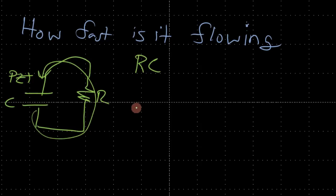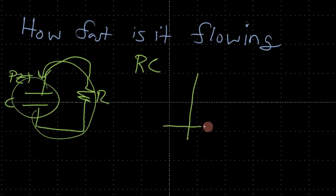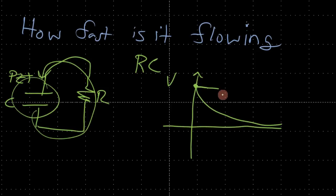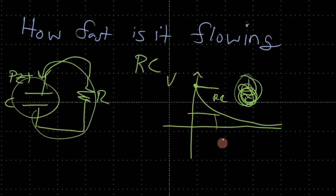The voltage is going to drop along this capacitor according to the RC time constant. Starting with a certain voltage, it will start to decrease — at the RC time constant there will be about 67% less charge remaining at a given time constant.